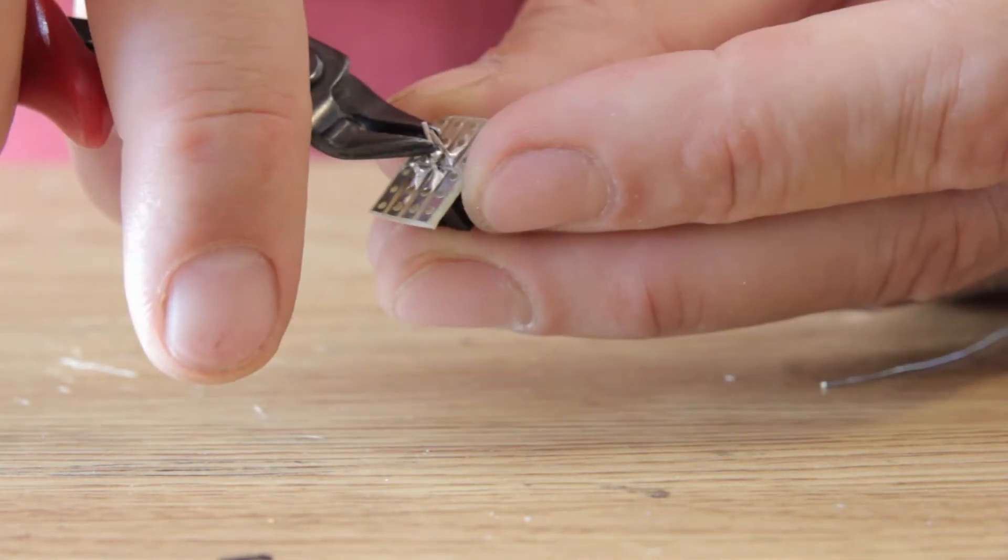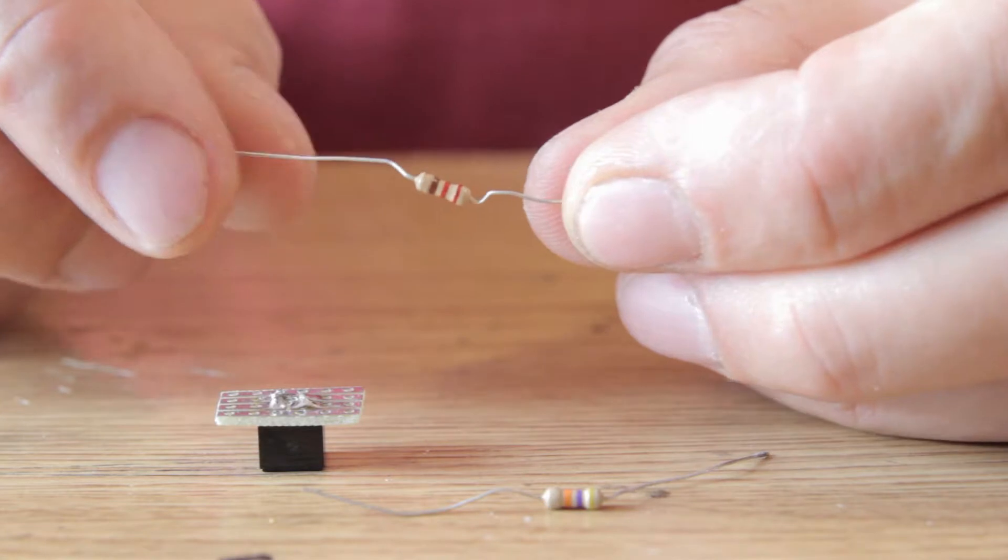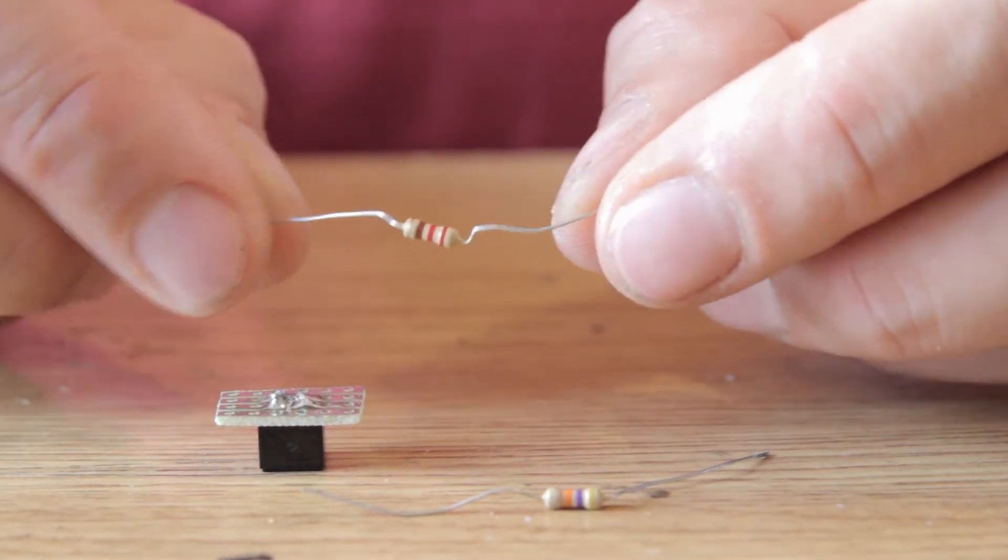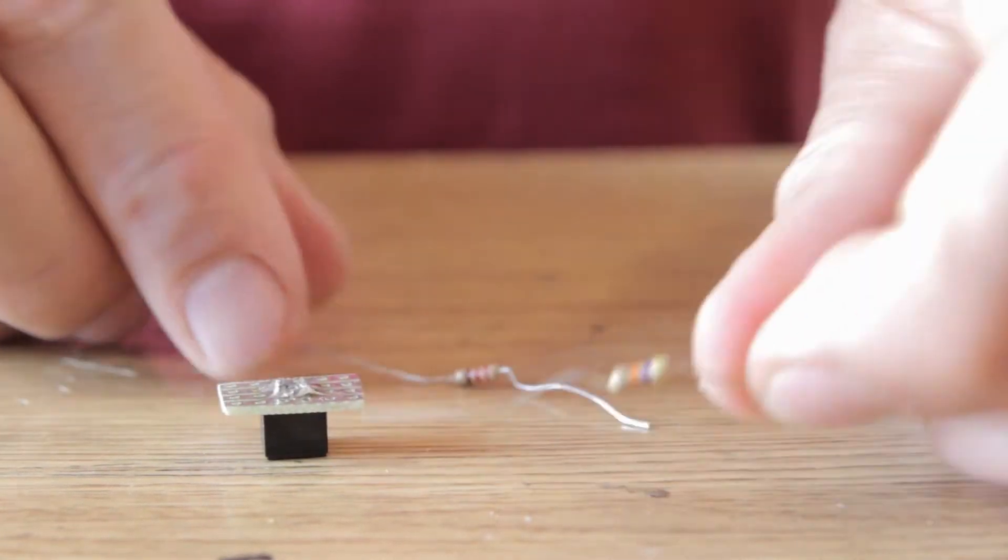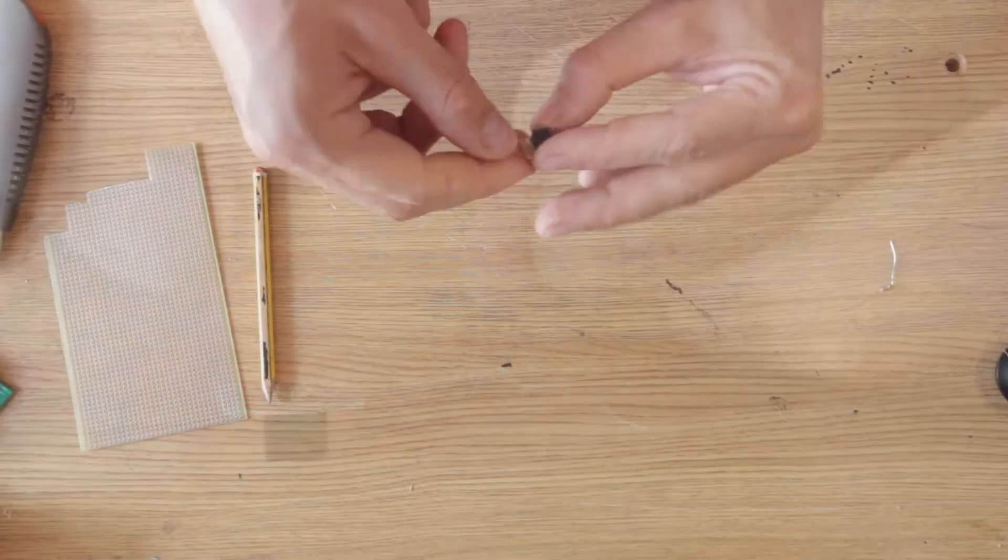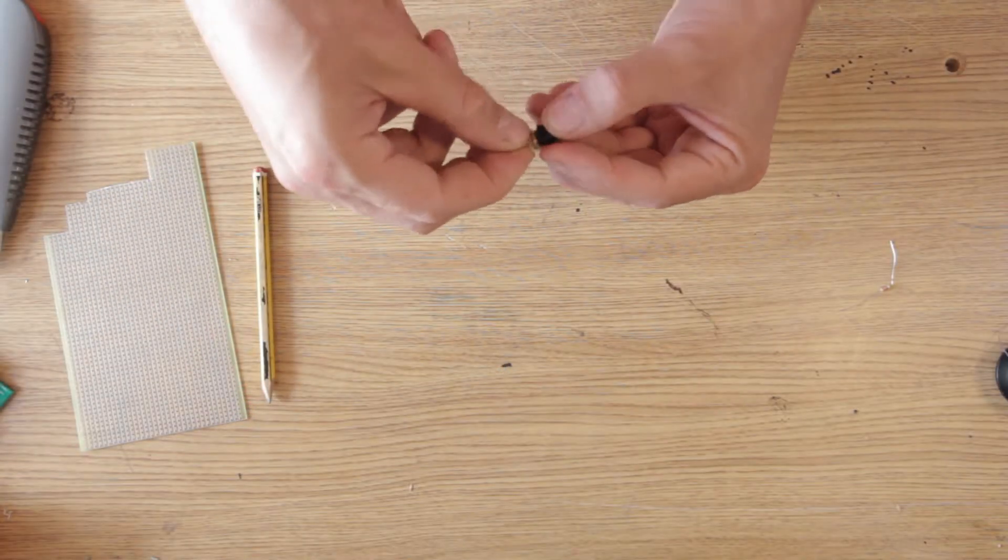This sensor module uses two resistors. One is a 220 ohm resistor connected in series with the LED. The other is a 47K resistor used to adjust the sensitivity of the photosensor. I insert the resistors so they both connect to the same free rail on the strip board.